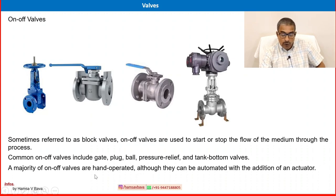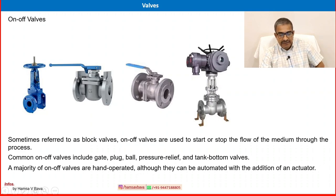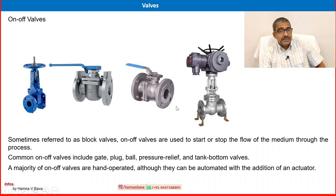A majority of on-off valves are hand operated, as you can see from the handle shown. However, they can be automated with the addition of an actuator. The actuator is the driver of the valve — we use air, electrical, or hydraulic signals, or a motor, for opening and closing. This is an example of a motor-actuated valve. We will also see air-actuated and hydraulic-actuated valves in coming sessions.